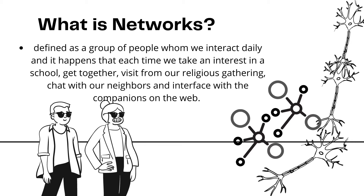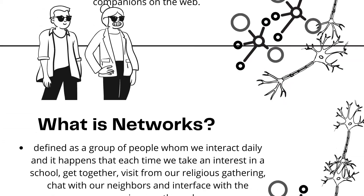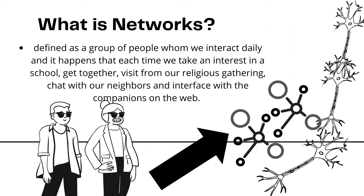So, what is a network? It is defined as a group of people whom we interact with daily. It happens each time we take an interest in school, get together, visit from other religious gatherings, chat with our neighbors, and interface with companions on the web. It is also defined as a set of nodes and a set of ties. Some people say that it is like a neuron, and that neuron has different sets of hubs or nodes. These nodes are a representation of our connection and relationship toward other people.